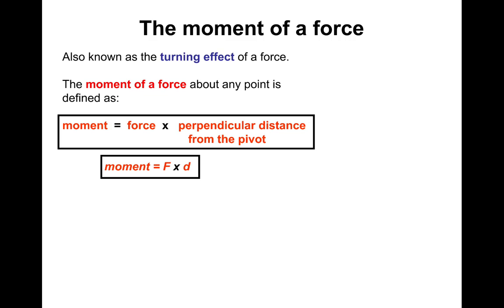So moment is F times D. It's measured in Newton meters, because obviously moment is force times distance. Force is in Newtons and distance is in meters, so moment is Newton meters. And moments are designated a direction - they're either clockwise or anticlockwise.